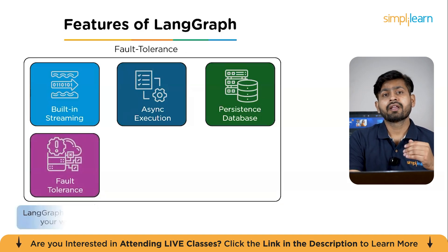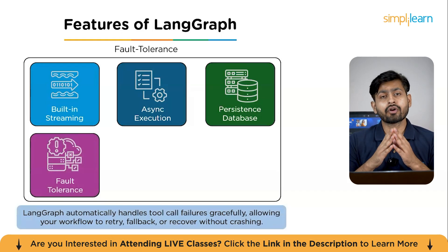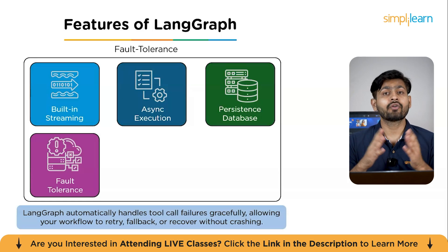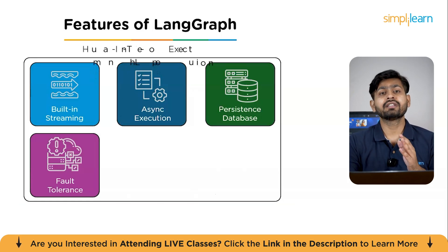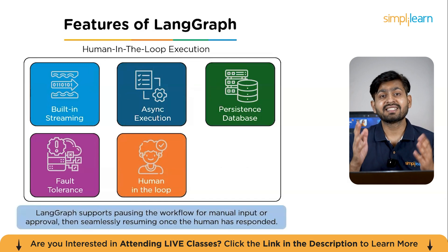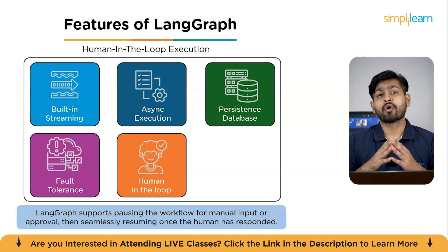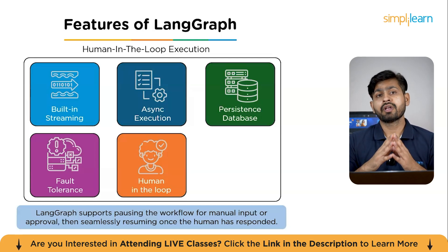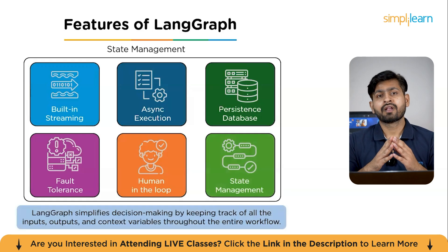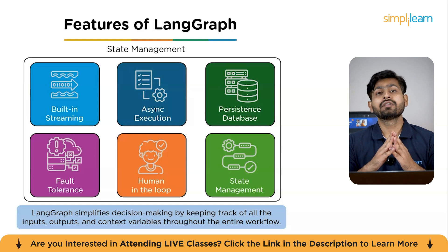The fourth feature is fault tolerance. If one of your workflow tools is inactive or not operational, LangGraph automatically handles call failures so your entire flow isn't disrupted. Fifth, we have human-in-the-loop: LangGraph supports pausing the workflow and seamlessly resuming once a human has responded, as we already saw in the medical assistant example. Finally, state management simplifies decision-making by keeping track of all inputs, outputs, and context variables throughout the entire flow.